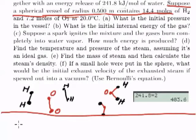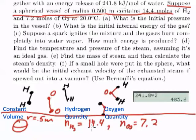Now suppose a spherical vessel with 0.5 meter radius contains 14.4 moles of H₂ and 7.2 moles of O₂. So that's 14.4 moles of hydrogen and 7.2 moles of oxygen.